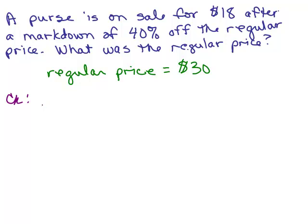You could do .4 times 30, and then that's 4 times 30, which is 120, and move the decimal in one. So it's $12 off. All right, so if you do 30 minus 12, it does get $18.